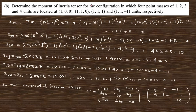Question 6b: Determine the moment of inertia tensor for a configuration of 4 masses located at given positions. Using Ixx = Σmᵢ(yᵢ² + zᵢ²), Iyy = Σmᵢ(xᵢ² + zᵢ²), Izz = Σmᵢ(xᵢ² + yᵢ²), and off-diagonal terms Ixy = −Σmᵢxᵢyᵢ, etc., substituting the coordinates of each mass gives the complete 3×3 moment of inertia tensor with numerical values such as Ixx = 16 and so on.